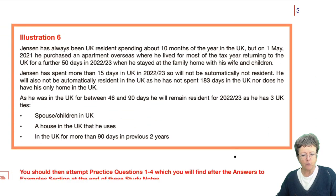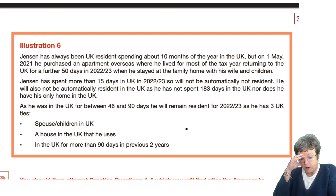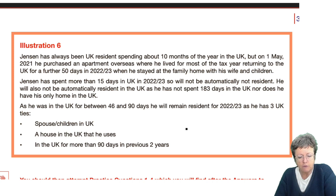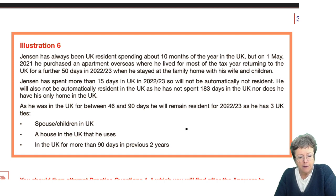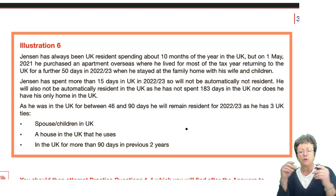Last illustration — Jensen. Jensen has always been UK resident, spending 10 months of the year in the UK. But in May he bought an apartment overseas and lived there for most of the tax year, returning to the UK for a further 50 days in 2022-23, staying at the family home with his wife and children. He spent more than 15 days in the UK so will not be automatically not resident. He won't be automatically resident either as he didn't spend 183 days nor does he have his only home in the UK. As he was here between 46 and 90 days, he remains resident as he has three ties: a spouse and children, a house here, and he was here for more than 90 days in the previous two years. Read the question and apply it to the rates.